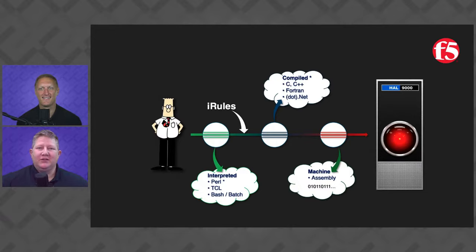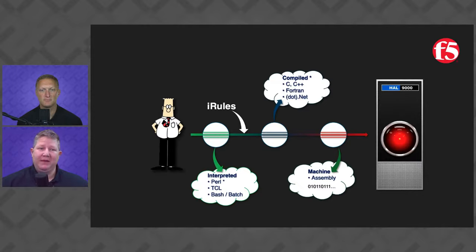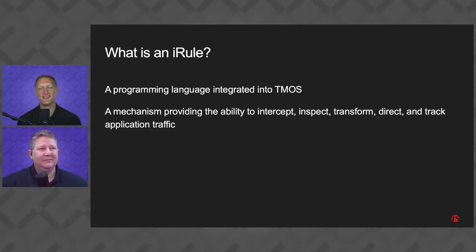iRules sit kind of between interpreted and compiled languages. Think about running a Python script — every time you run it, it compiles to bytecode. With iRules, they're all compiled at save time, so it doesn't have to do that interpretation on every connection. Think about every connection arriving at the BIG-IP — if you had to interpret and then execute on each one, that could get very painful very fast. It kind of lives between interpreted and compiled.